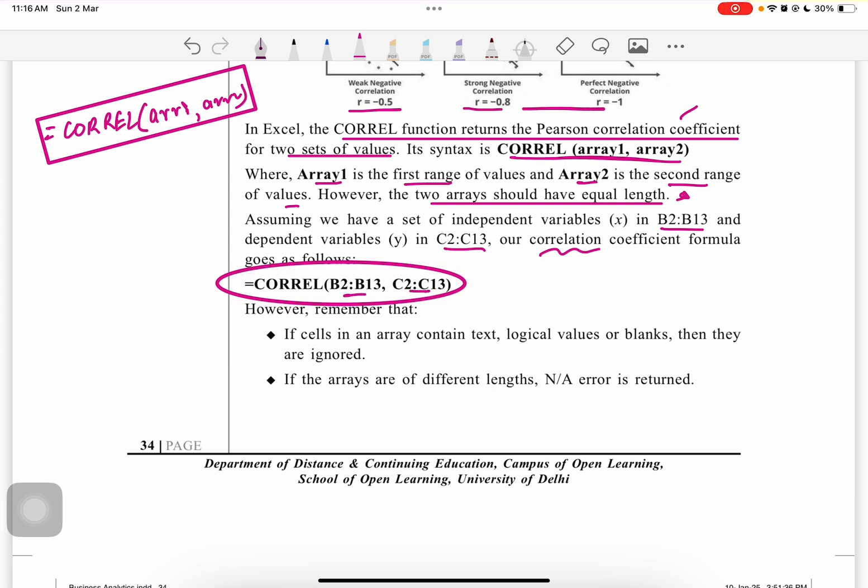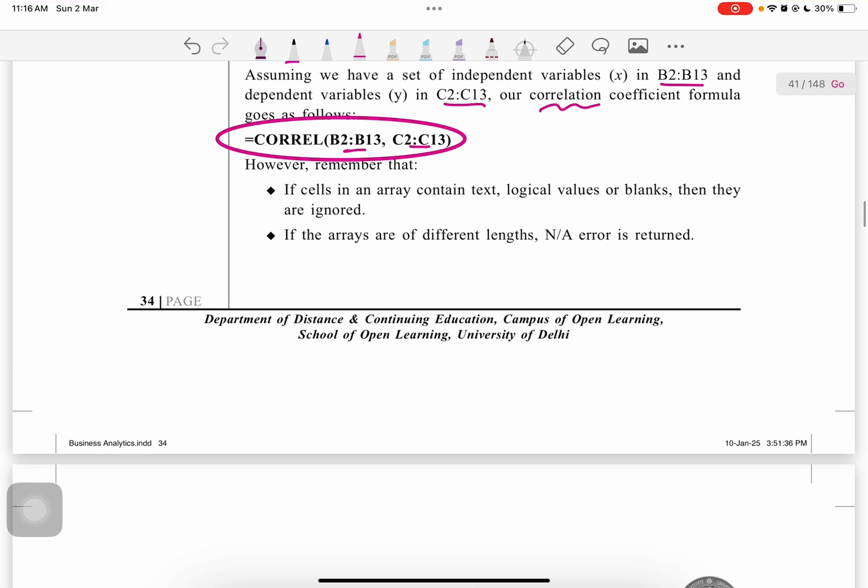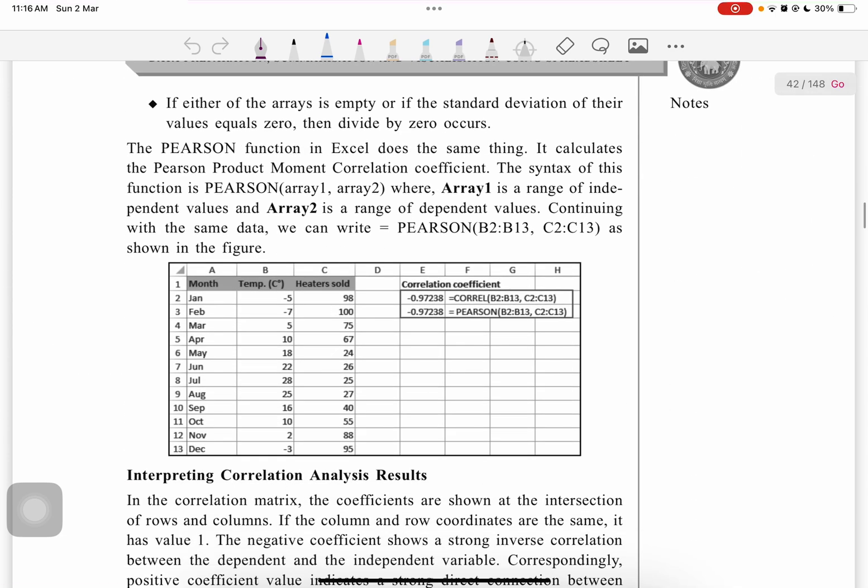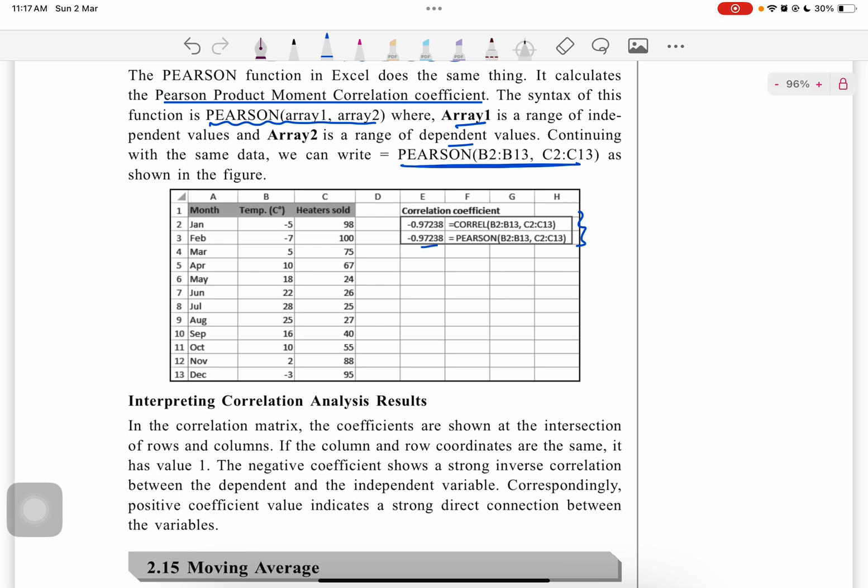These are two data sets. Remember that if cells in arrays contain text, logical values, or blanks, they are ignored. If arrays are of different lengths, an error will occur. If either array is empty or has standard deviation equal to zero, then a divide-by-zero error will occur. The PEARSON function in Excel does the same thing—it calculates the Pearson product moment correlation coefficient. The syntax for PEARSON is the same as correlation, and it gives the same answer.